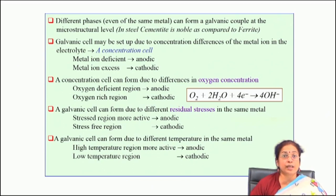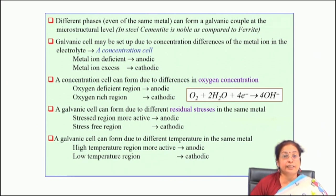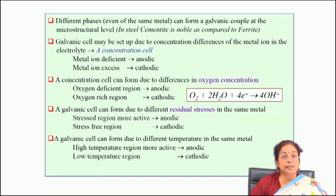A micro-galvanic cell can also form when there is an oxygen-deficit or oxygen-enriched regime. In the case of crevice corrosion, differential aeration cell formation occurs because of oxygen concentration differences, which is essentially a kind of galvanic attack. Initiation starts because of galvanic corrosion and then proceeds to a large extent due to autocatalytic reaction.